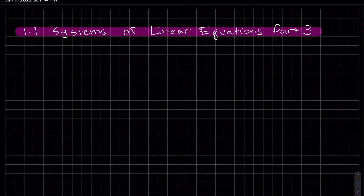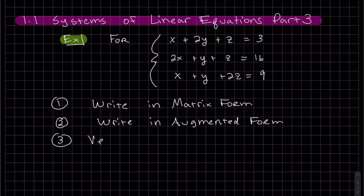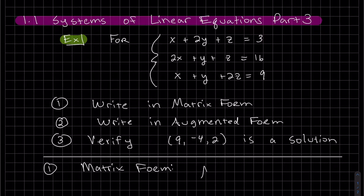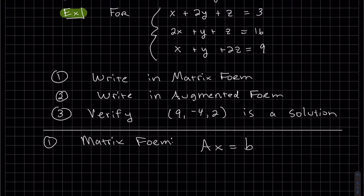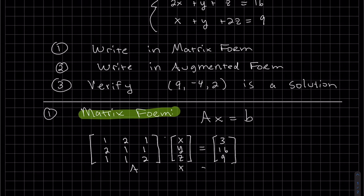This is part three of systems of linear equations, and I'm going to focus on one example. For this system, the matrix form will be this form, where A is my coefficient matrix, X is my variable vector, and B is my constants on the right, the constant vector. Of course, that's AX equals B.